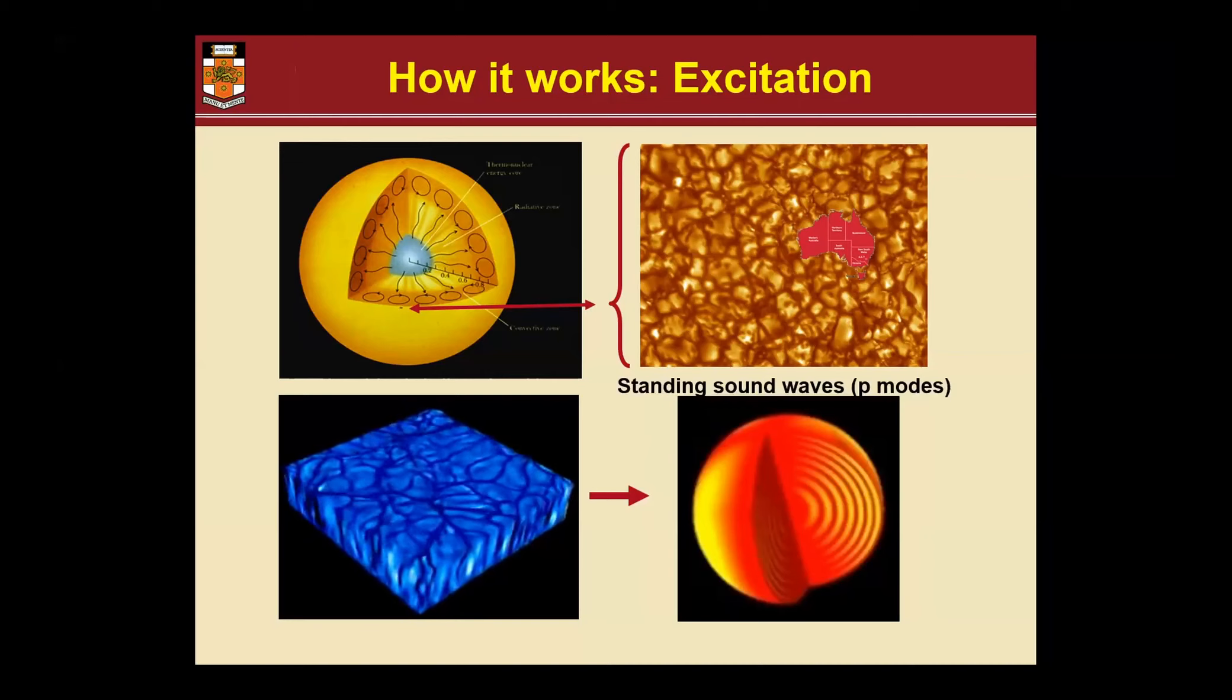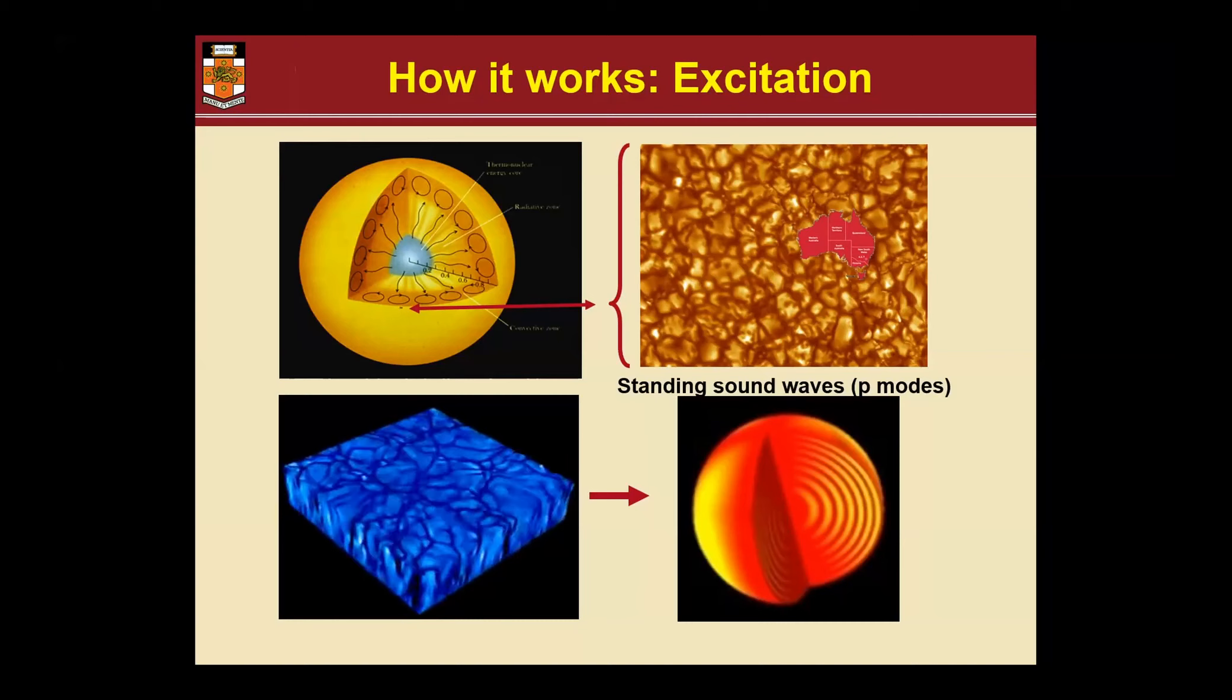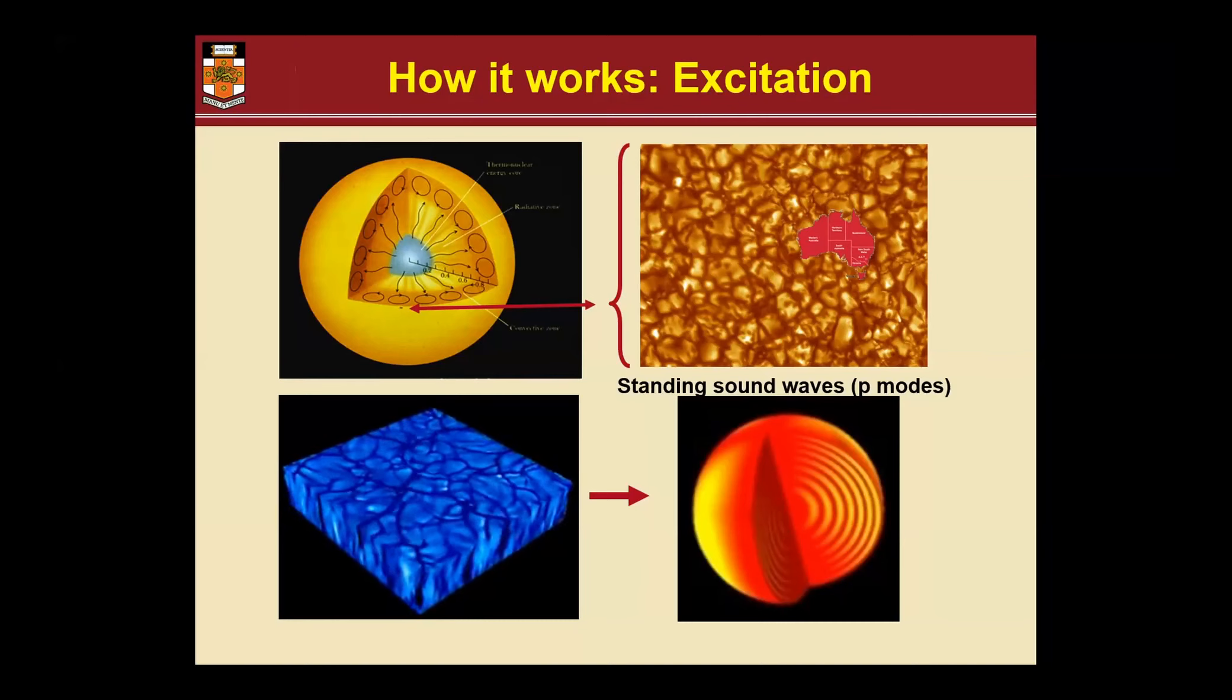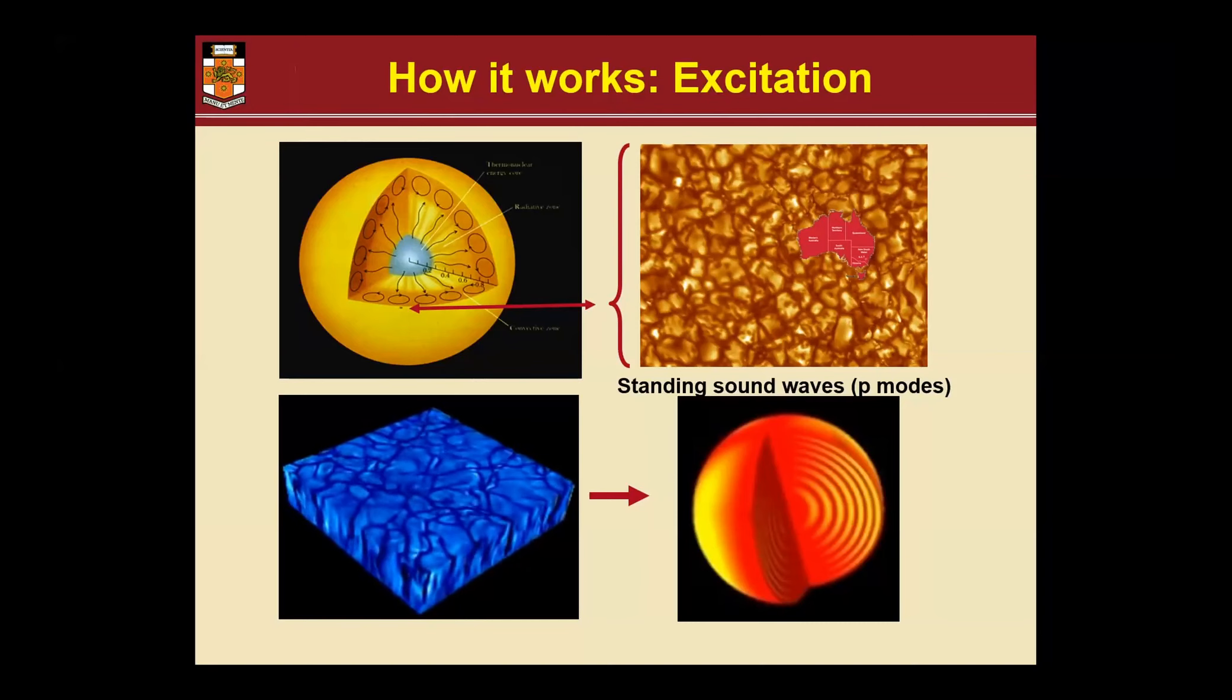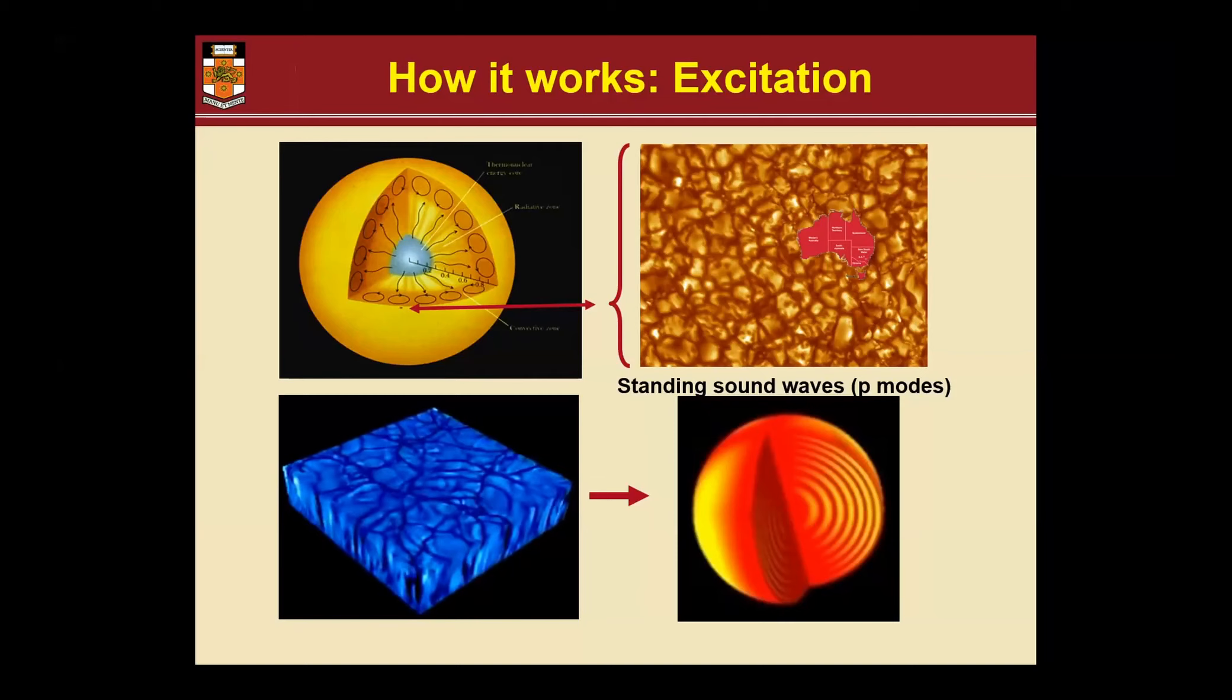These basically star quakes, there are millions of them all around the star happening at the same time, and they're close to the sound speed when they hit the surface from beneath. So they excite sound waves that travel through the star. Some of them then resonate with standing waves that are obviously determined by the size, the mass and all the physics of the star.